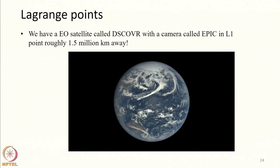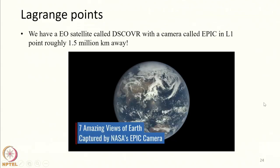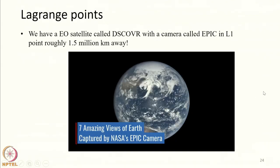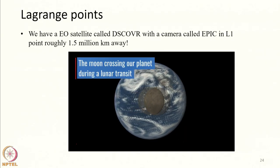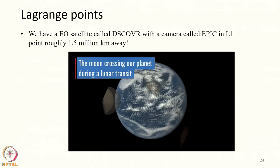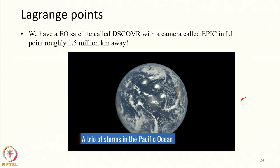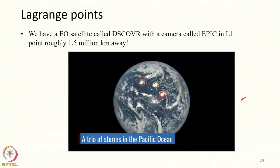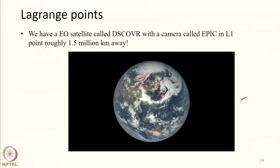There is a small video by NASA — let me play this. This is how the EPIC camera sees the earth. This shows when the moon crossed over the earth as captured by the EPIC camera. This shows three cyclones at the same time in the Pacific Ocean captured by this camera.